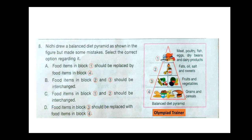Question 8. Nidhi drew a balanced diet pyramid as shown in the figure but made some mistakes. Select the correct option regarding it. The correct answer is option C — food items in block 1 and block 2 should be interchanged.